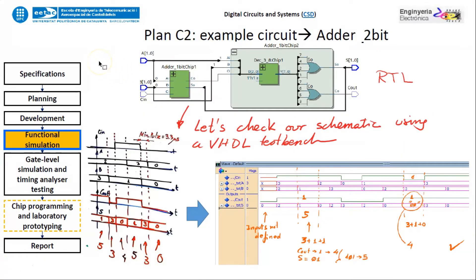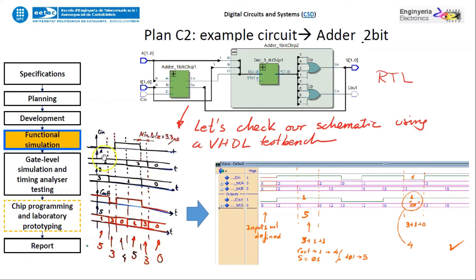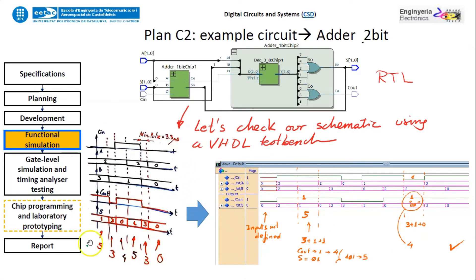The last section is the functional simulation, where your timing diagram has been converted into a test bench. This test bench runs in ModelSim so that your RTL is checked and you generate a waveform that you will analyze by hand, making annotations to verify whether the outputs the circuit generates are the ones you are expecting. That is the last part: specify, plan, develop, and functional simulate.